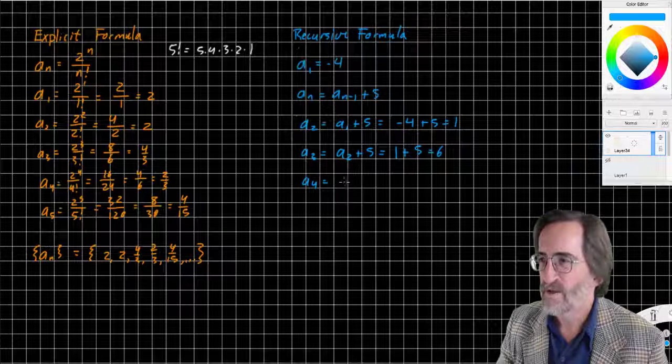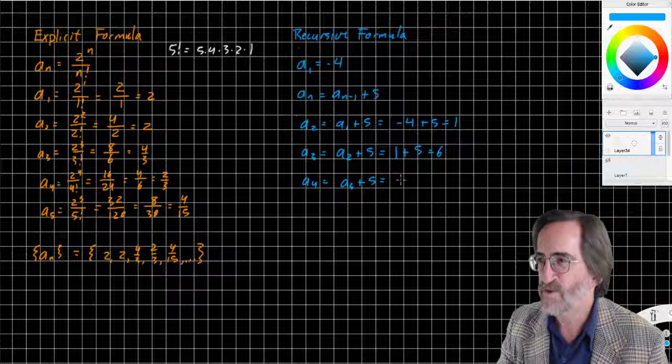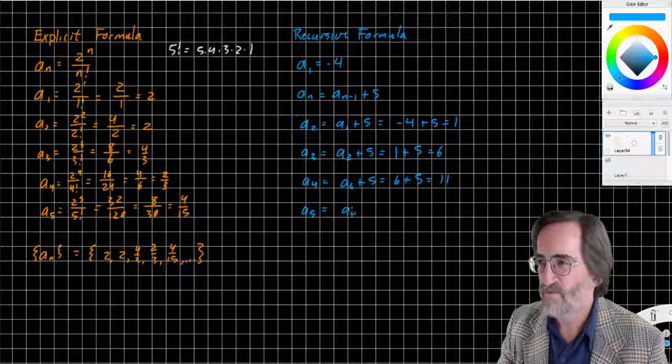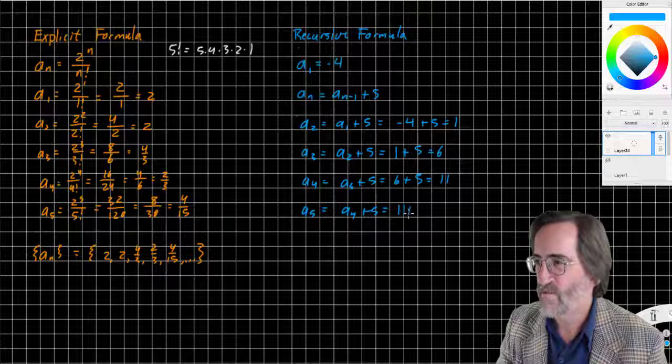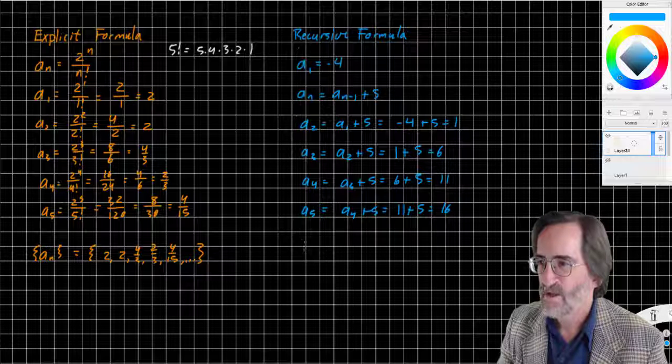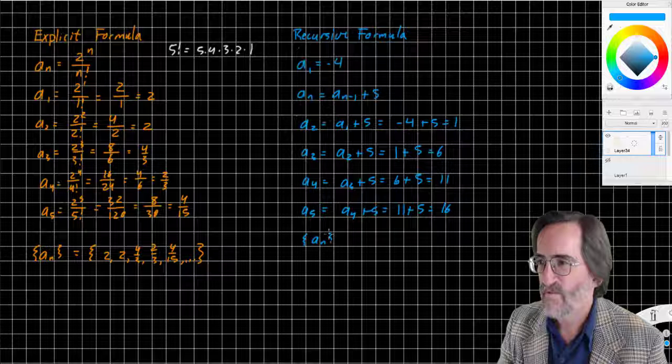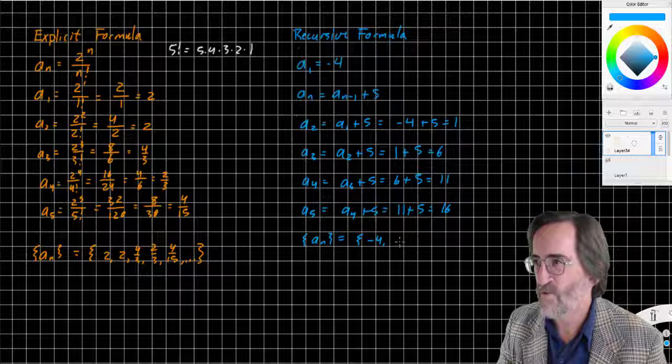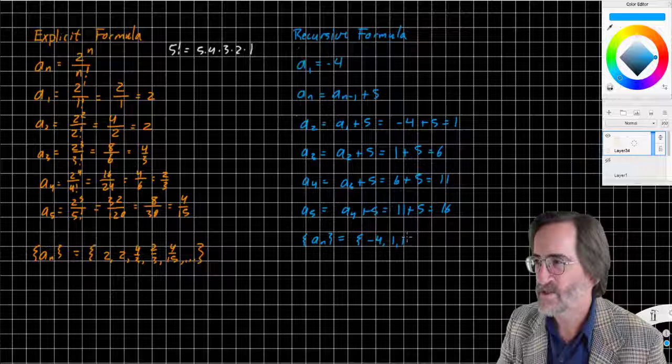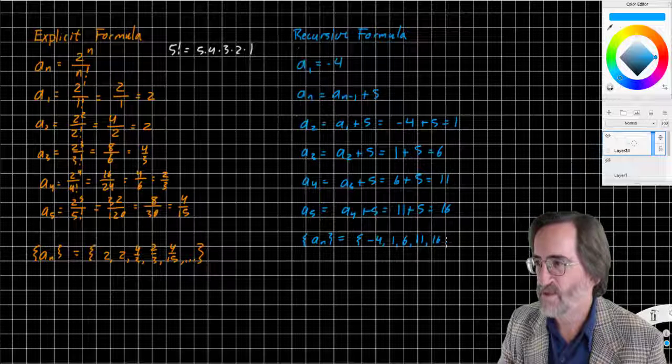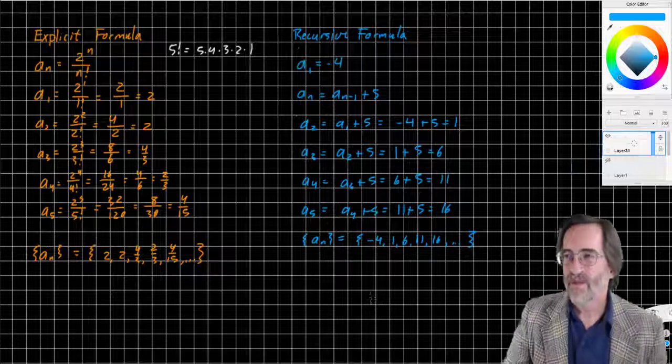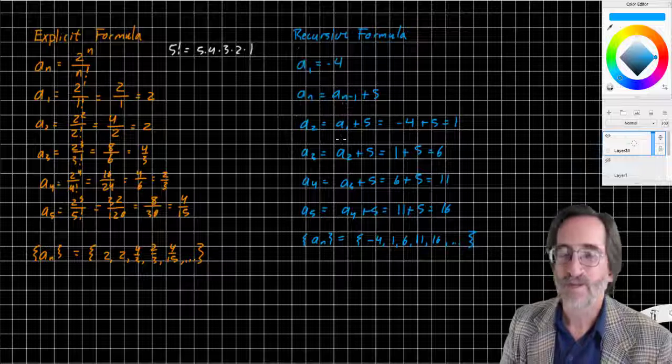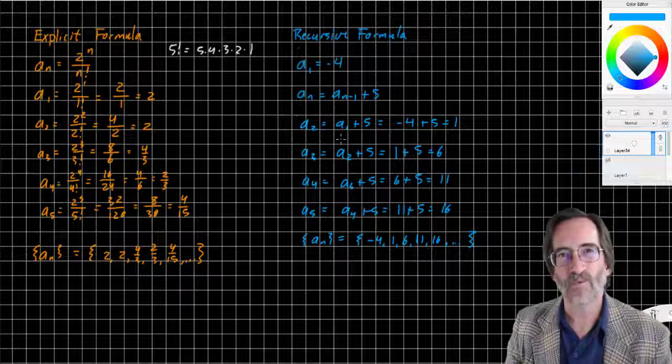A sub 4 is A sub 3 plus 5, which is 6 plus 5, is 11. And A sub 5 is A sub 4 plus 5, which is 11 plus 5, which is 16. So in this case, A sub n is negative 4, 1, 6, 11, 16. And so we have a recursive formula, and notice the rule here is simply saying add 5 repeatedly. It's based on knowing what the first term is, and then having a rule to generate the rest of the series.